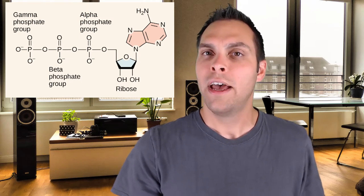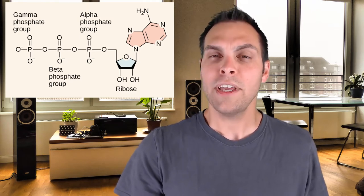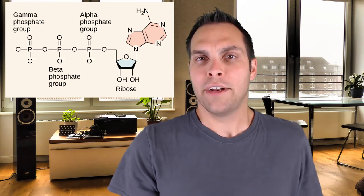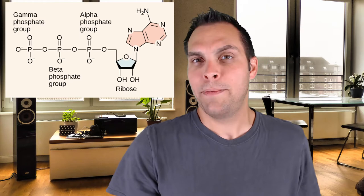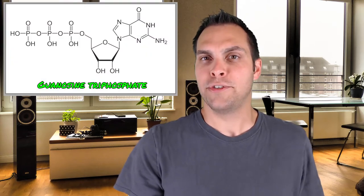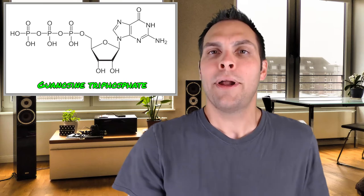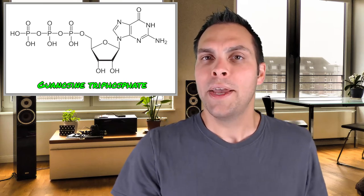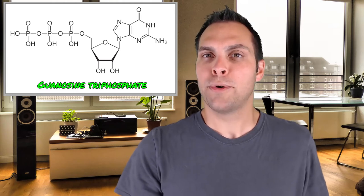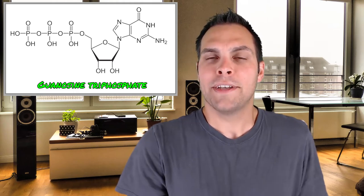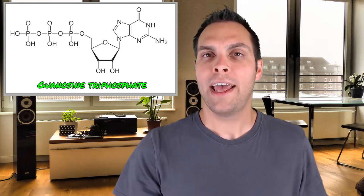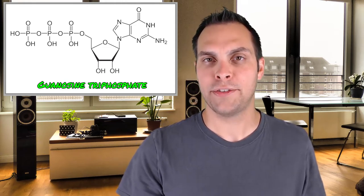There are other types of energy-containing molecules within cells — another good example is GTP, guanine triphosphate. Some enzymes and receptors use GTP as an energy source, but it is predominantly ATP that provides energy for most of the metabolic reactions we're talking about, because the enzymes performing these endergonic reactions require ATP as their energy source.